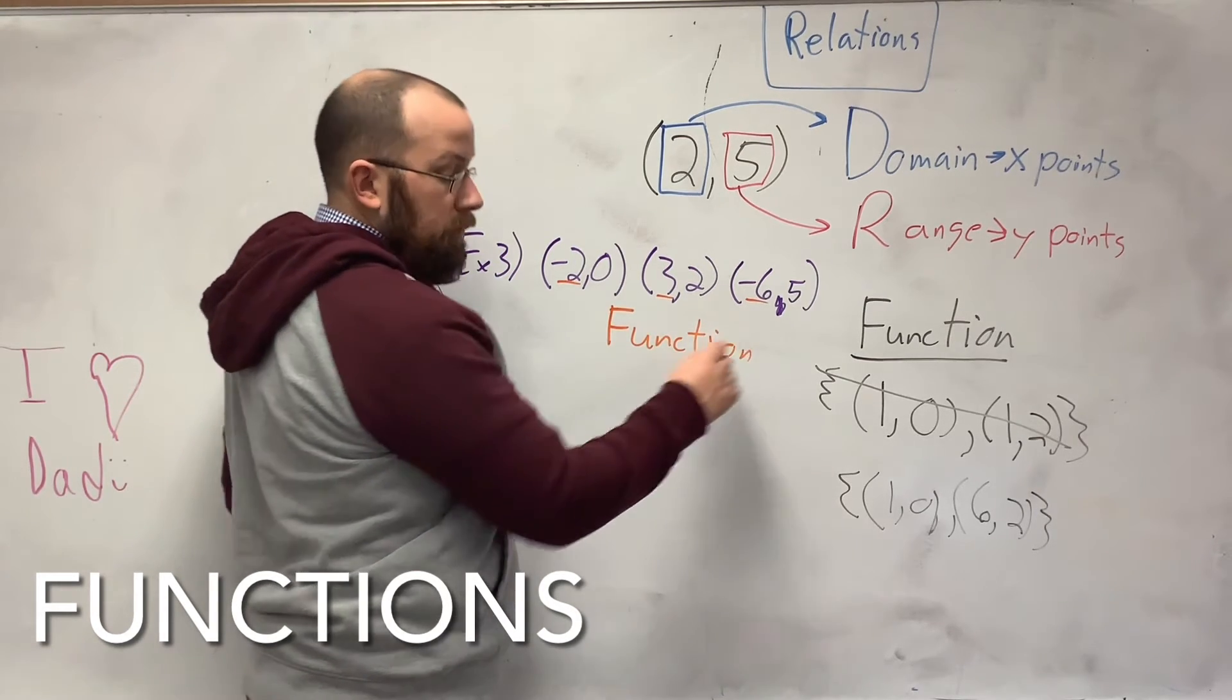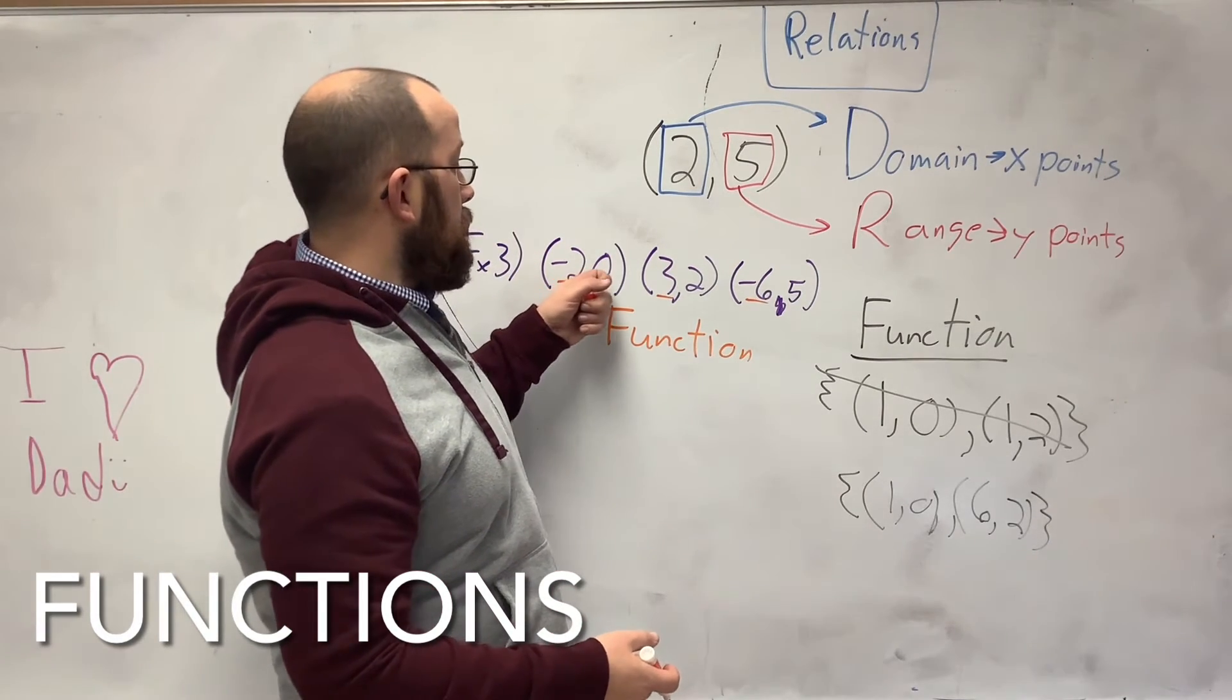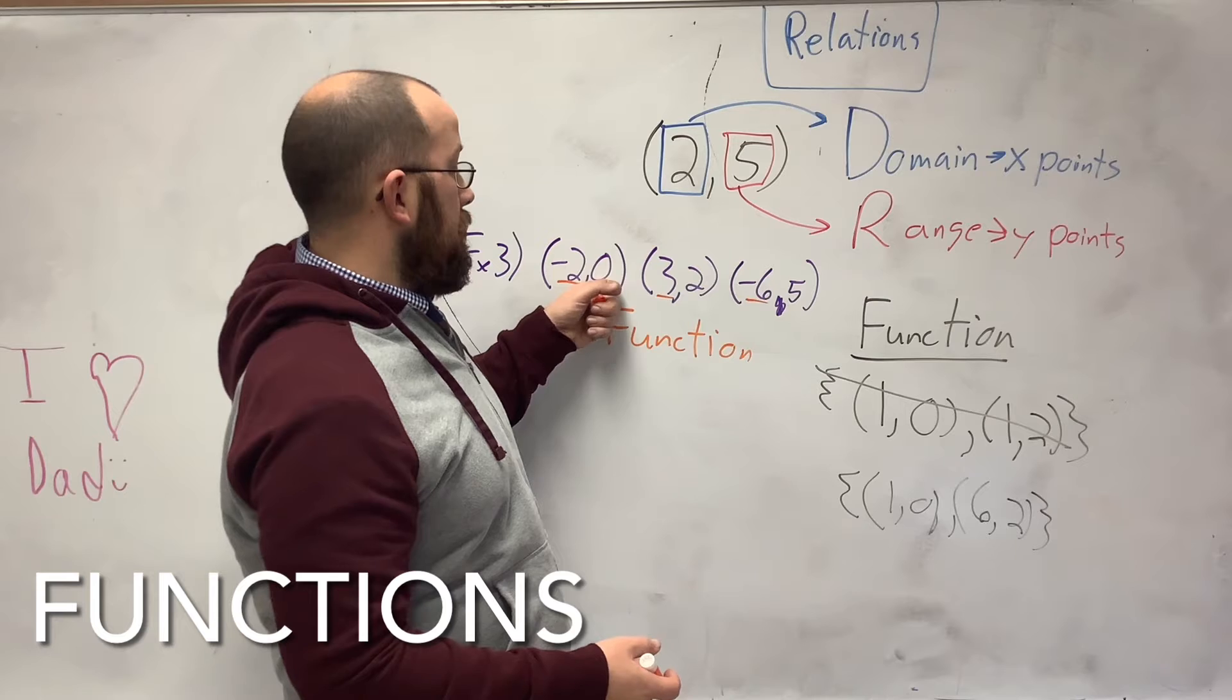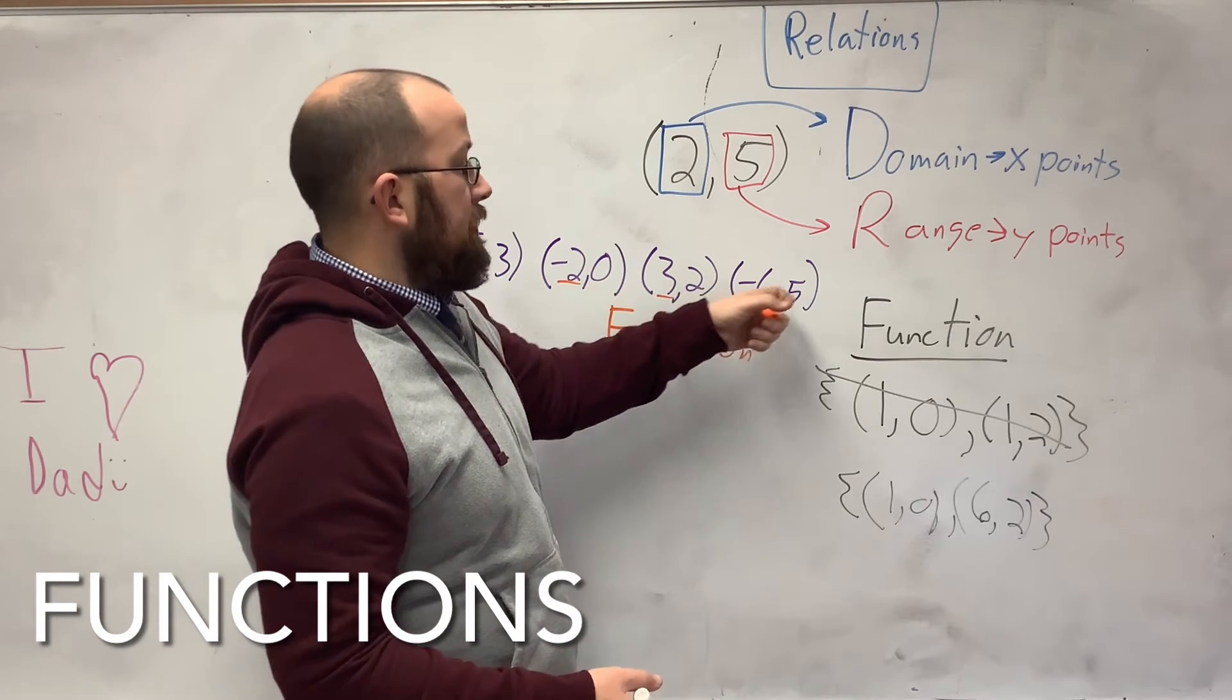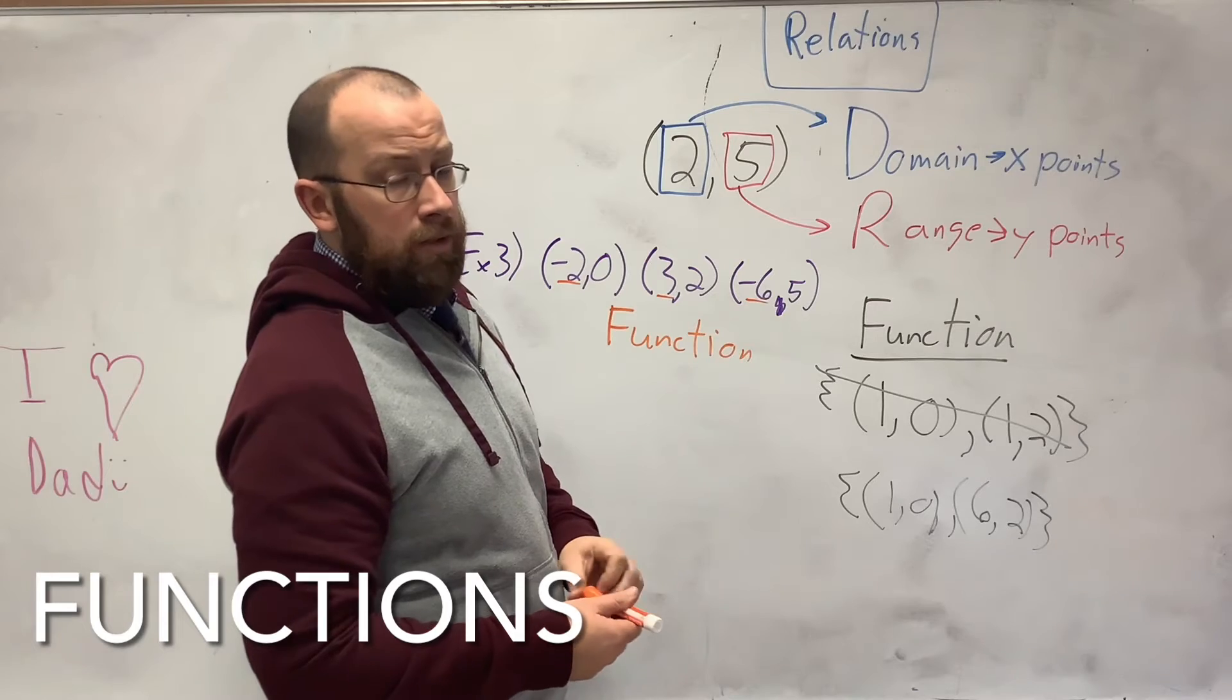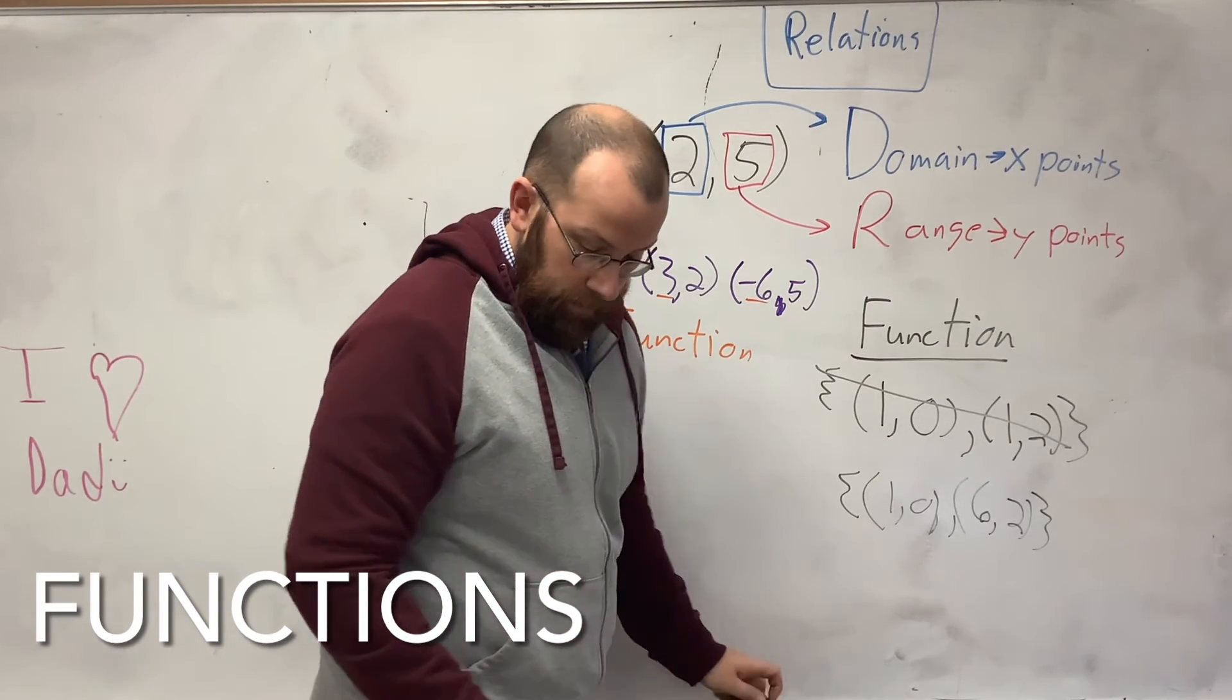Because each of these first coordinates is paired with only one second coordinate. So the -2 has the 0. The 3 has 2. -6 has 5. There's no repeating x's. And that's what you're usually looking for.